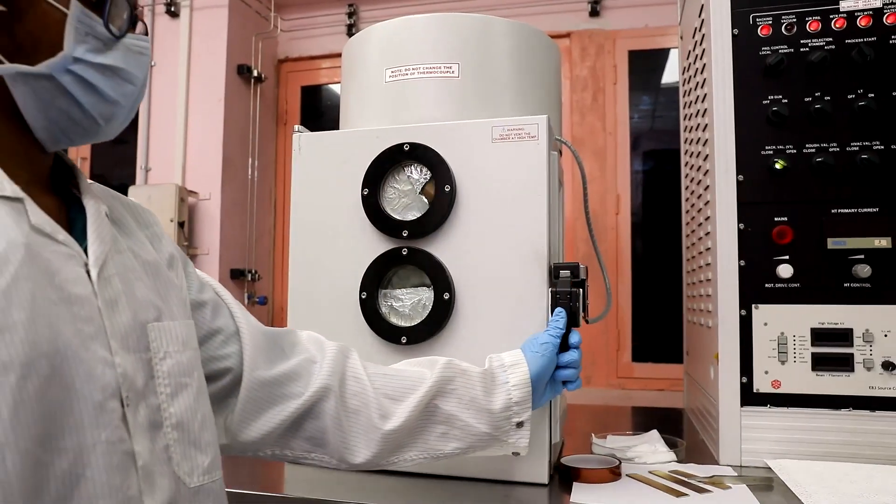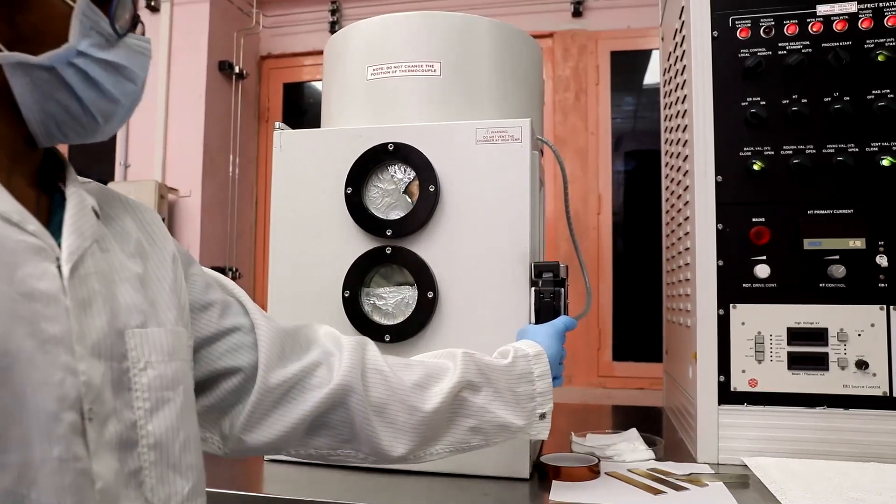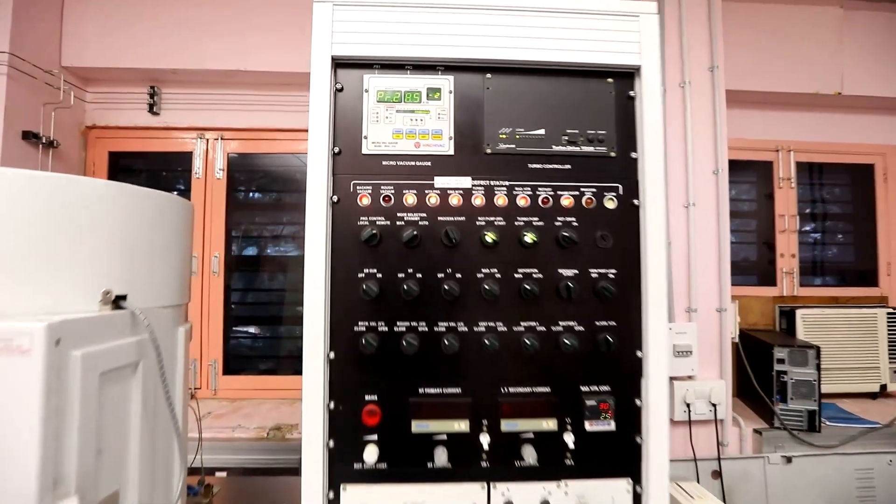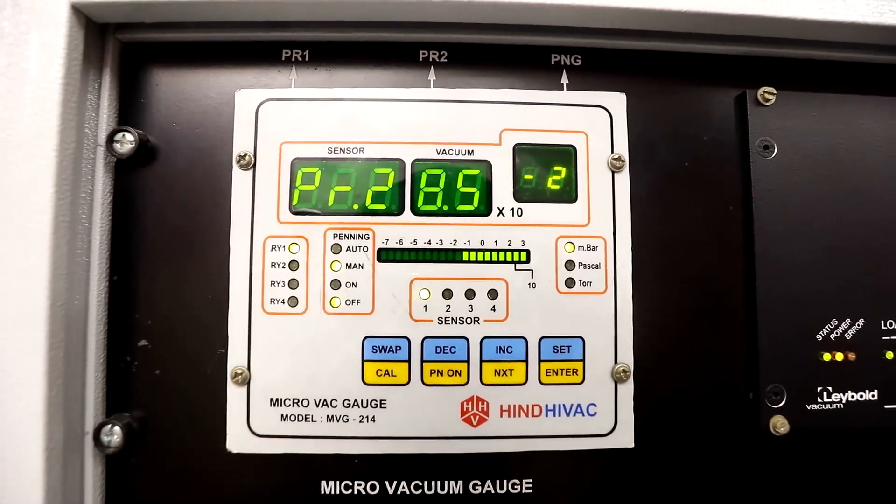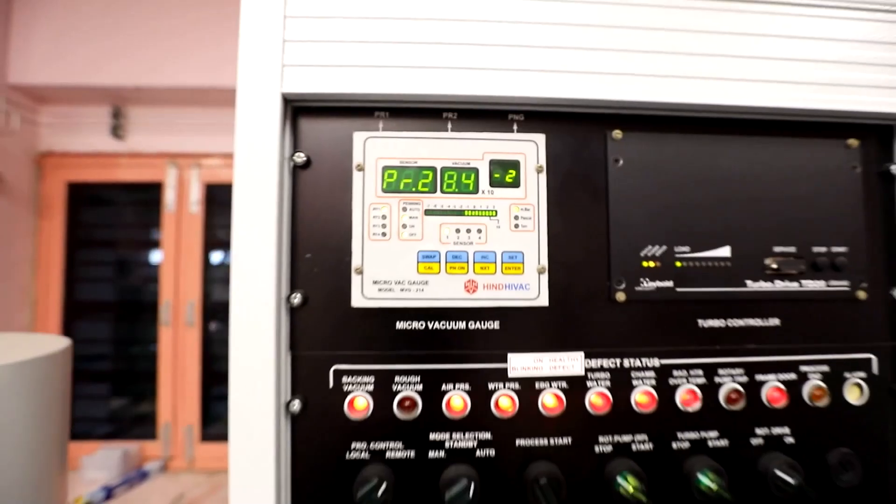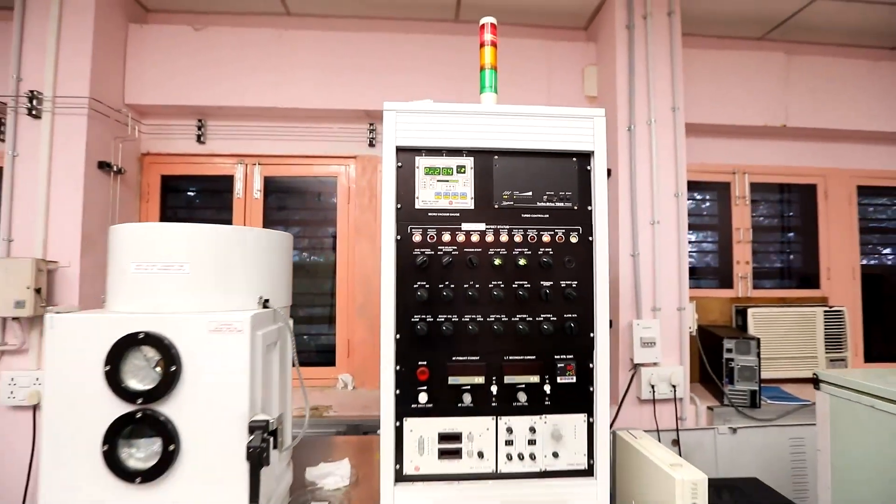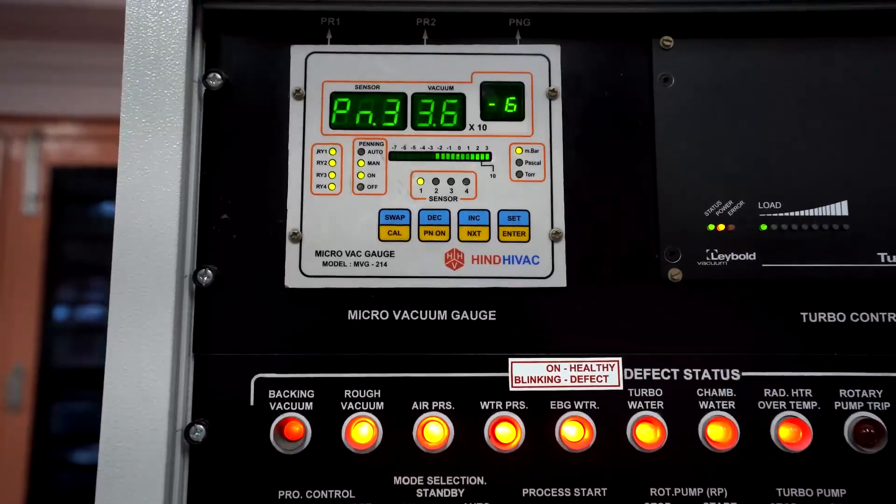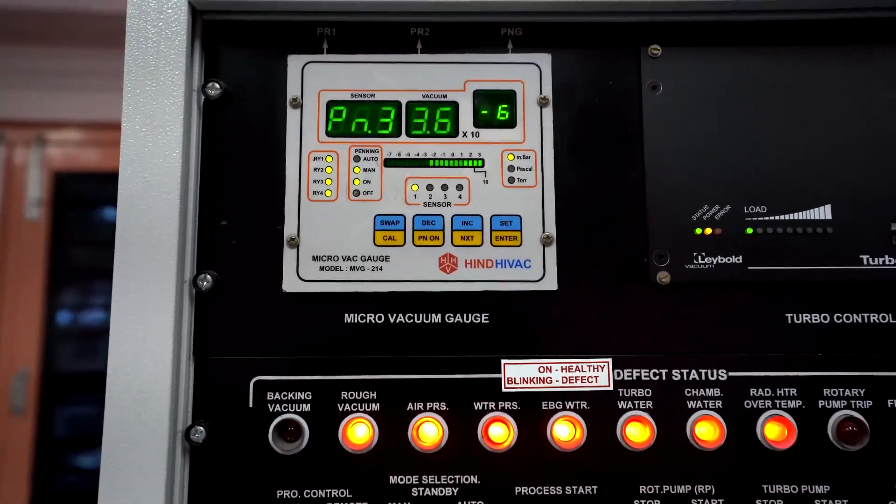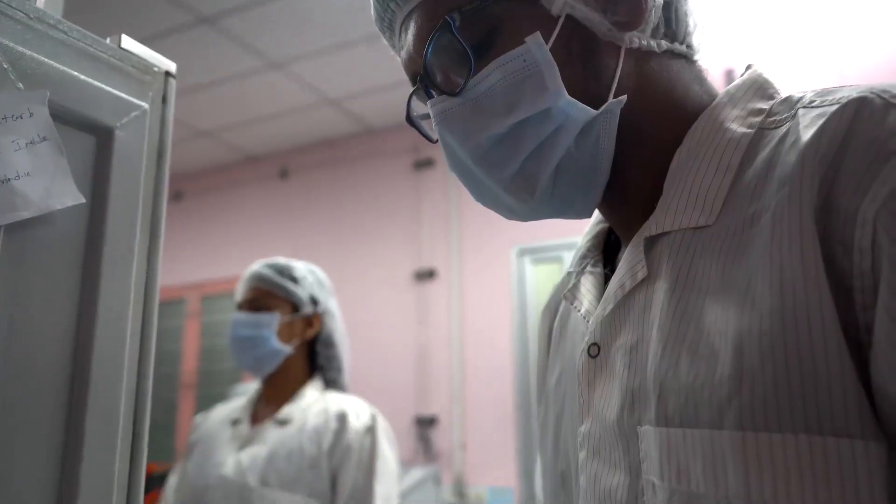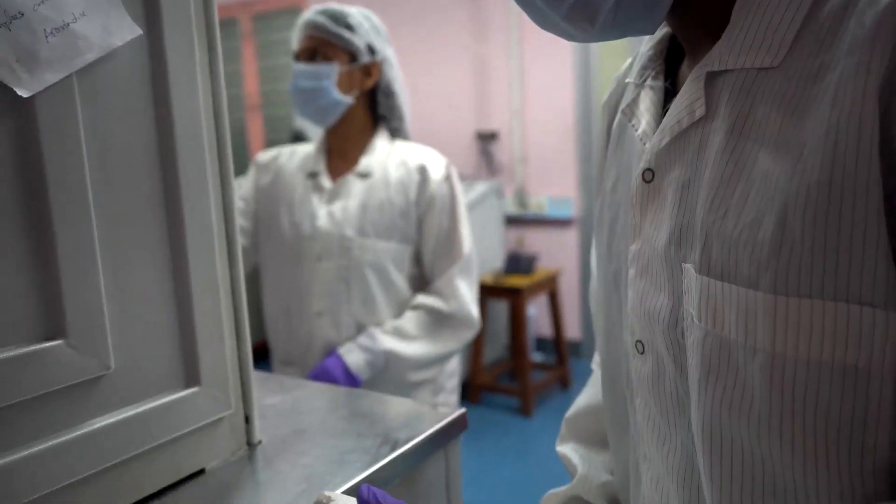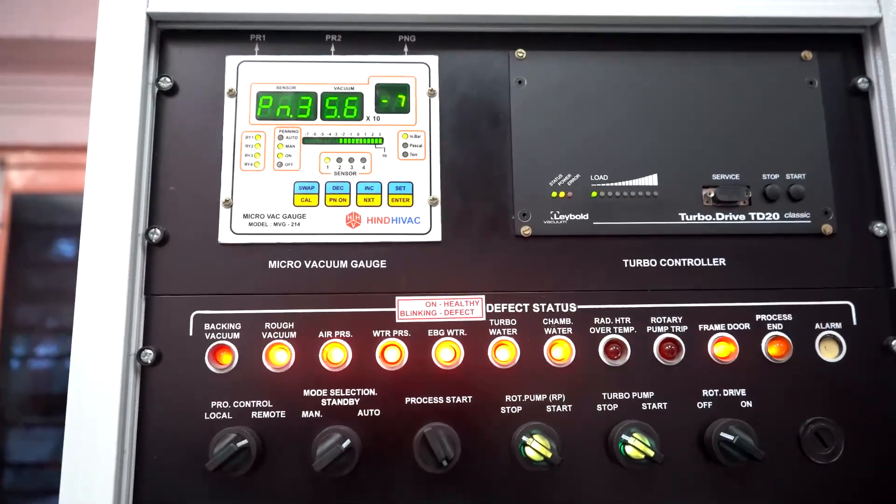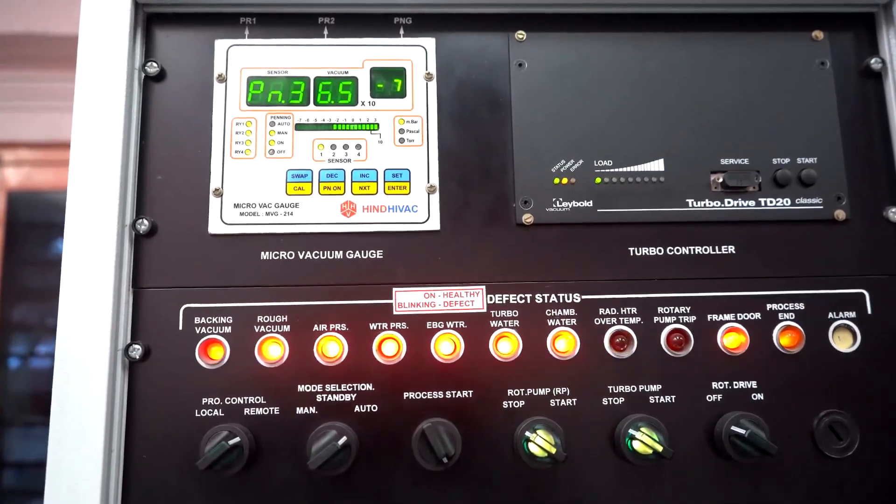Now close the chamber and start creating vacuum in the chamber. This starting vacuum is provided by the rotary pump till 10 to the power of minus 2 millibar, then higher vacuum is provided by the turbo pump. And when the vacuum reaches 3.5 into 10 to the power of minus 6 millibar range, we fill the liquid nitrogen and wait for a few minutes till it reaches around 6.5 into 10 to the power of minus 7 millibar.